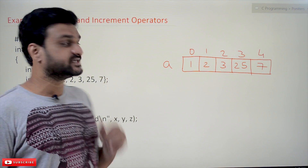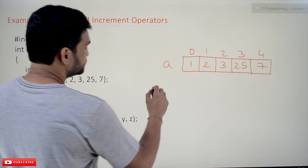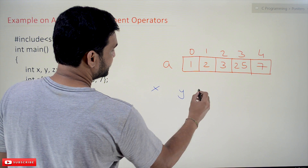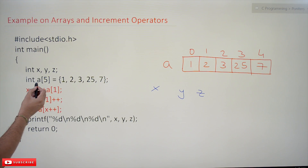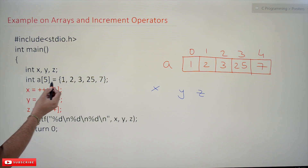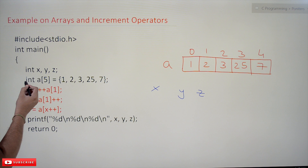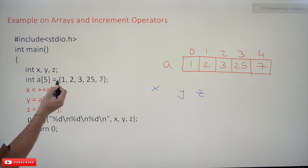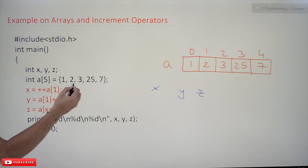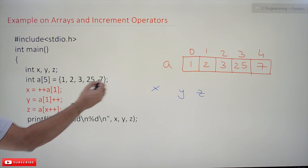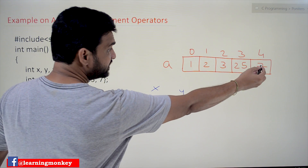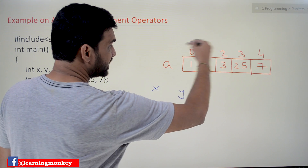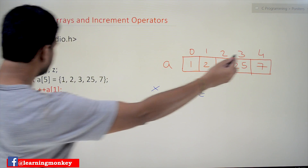Here we have created three variables: X, Y, and Z. We have created an array of five elements which is of integer type. The elements are 1, 2, 3, 25, and 7. This is the array 'a'.